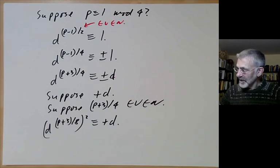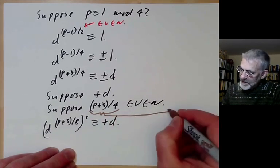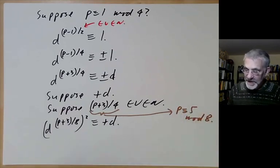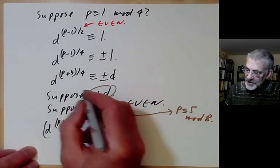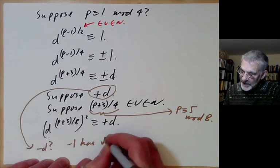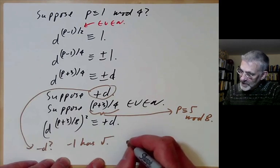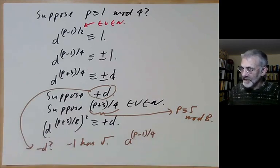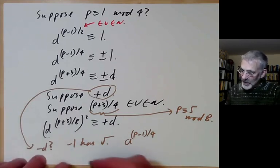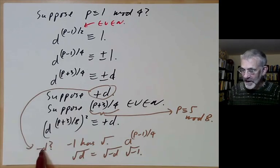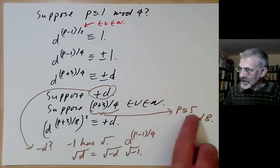If p ≡ 1 mod 4, it's either 1 or 5 mod 8. The p ≡ 5 mod 8 case is handled. What if we get -d? That's easy because -1 has a square root when p ≡ 1 mod 4: take a random number a to the (p-1)/4, giving about a 50% chance of getting a square root of -1. Then the square root of d is just the square root of (-d) times the square root of (-1).